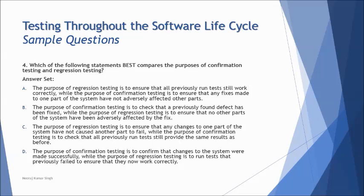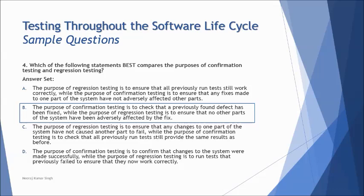Question four: which of the following statements best compares the purpose of confirmation testing and regression testing? Confirmation testing confirms whether the defect that was reported has been fixed. Regression testing ensures that the fix does not have any adverse effect on other parts of the module. Option B gives the correct answer with the exact definitions of both confirmation and regression testing. The other options conflict with these definitions or give them in reverse, so you can eliminate A, C, and D and pick only B.